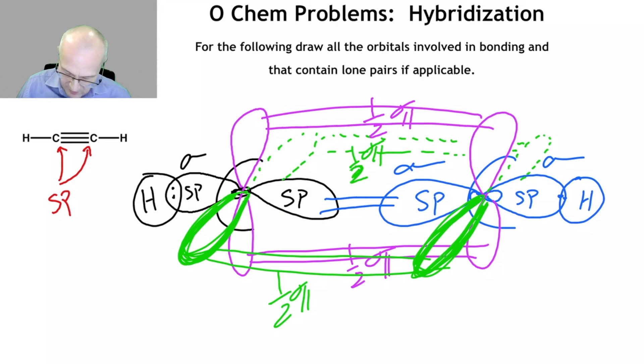Now, we need to know the bond angles. From sp to sp, from here to here, obviously that's 180 degrees. It's linear. From p orbital to p orbital, so from the purple one to the green one, let's say, that's 90. And from the sp to the p orbital is also 90 degrees.